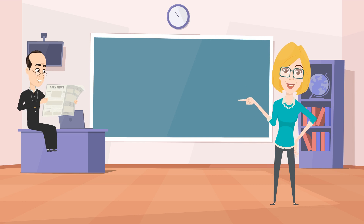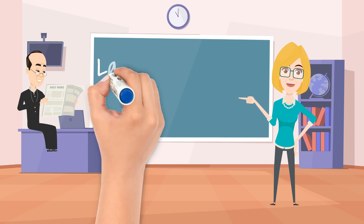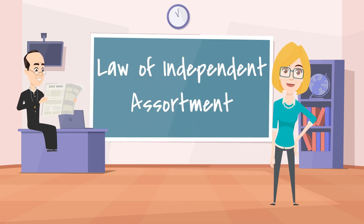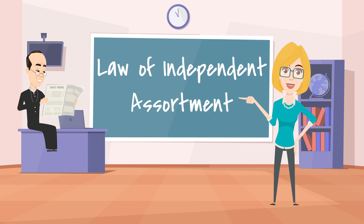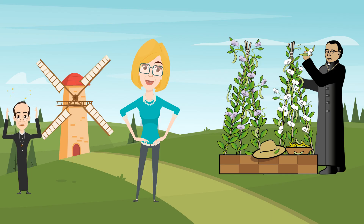Finally, let's cover Mendel's third law, the law of independent assortment. The law of independent assortment states that traits are inherited independently of one another. For example, the color of a flower may be inherited separately from traits dictating height or leaf color, and each trait will have its own set of dominant and recessive characteristics independent of one another.